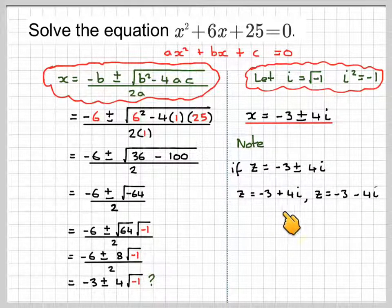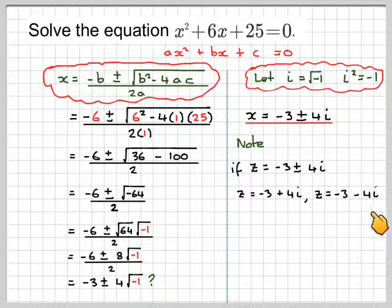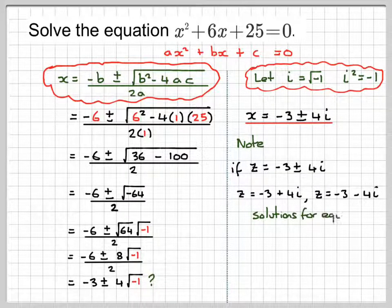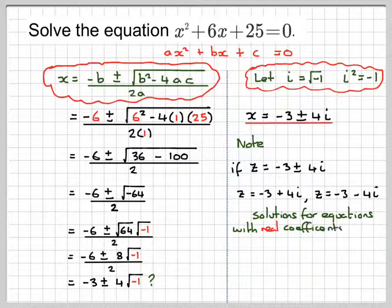Notice that the minus 3 and the 4, minus 3 and the 4 are the same. It's the only thing that's different each time, that is one is plus and one is minus. These are called conjugate pairs. And now, solutions for equations with real coefficients,